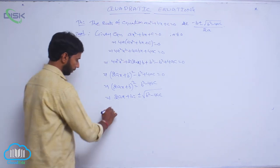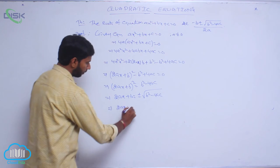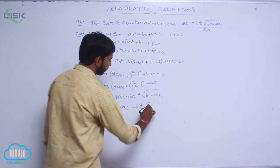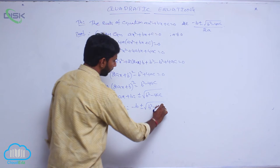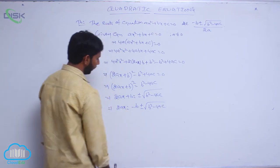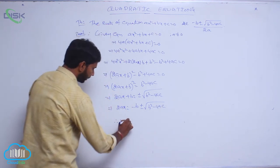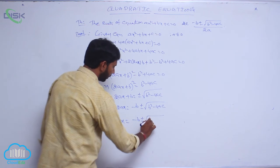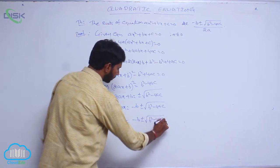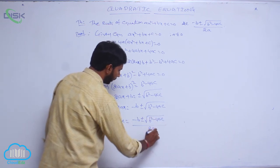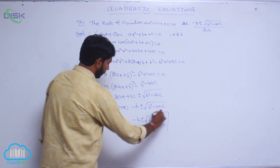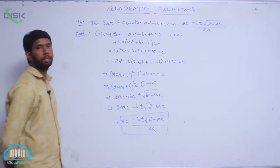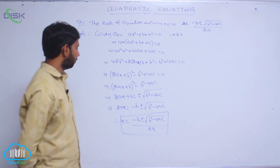That implies 2Ax = -B ± √(B² - 4AC). Therefore, x = (-B ± √(B² - 4AC)) / 2A.